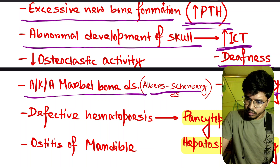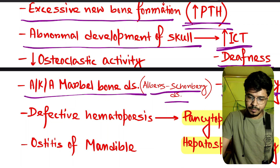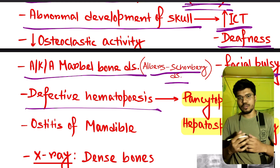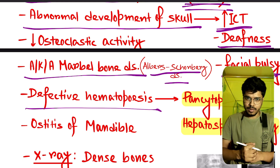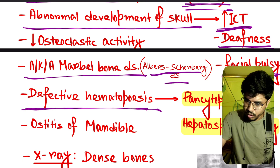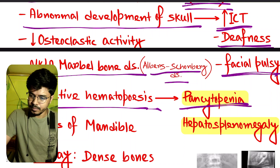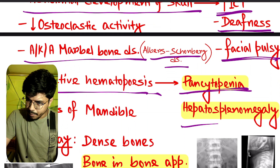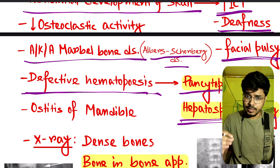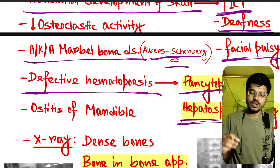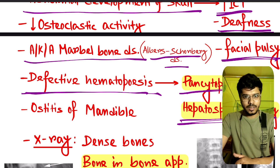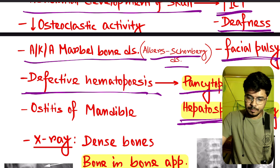It is also called Albers-Schönberg disease. There is defective hematopoiesis due to abnormal bone development, so the features are pancytopenia and hepatosplenomegaly — because if hematopoiesis is defective in bone marrow, hematopoiesis happens in the liver and spleen.